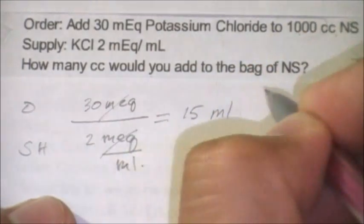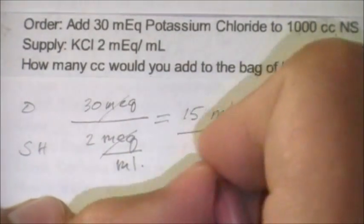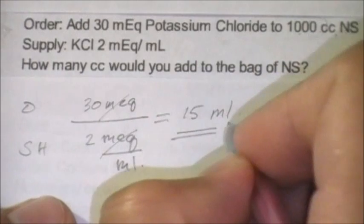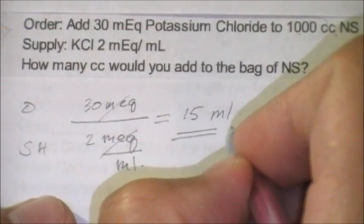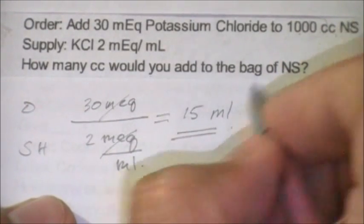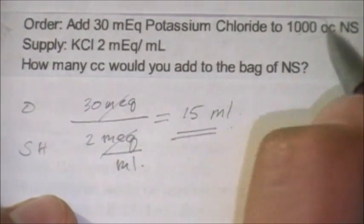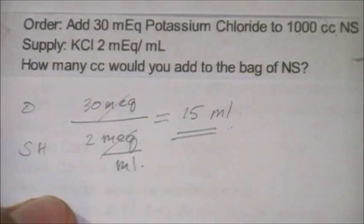Your answer is 15 ml, and this is the amount you are going to add to the 1 liter of normal saline.